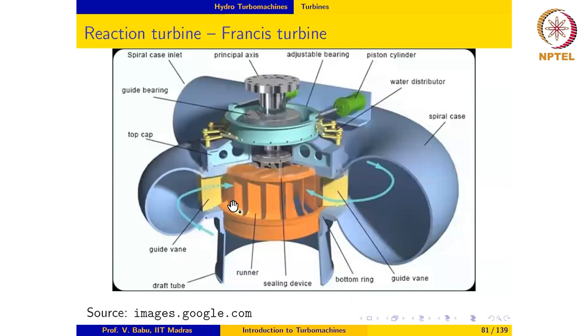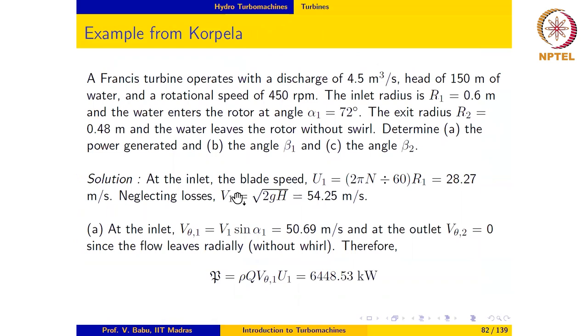So what we will do next is to work through an example involving a Francis turbine. The problem statement reads like this: the Francis turbine operates with a discharge of 4.5 m³/s, head of 150 meters of water and a rotational speed of 450 rpm. The inlet radius r₁ is 0.6 meters and the water enters the rotor at angle α₁ = 72°. The exit radius r₂ equals 0.48 meter and the water leaves the rotor without swirl. Determine the power generated, the blade angle β₁ and β₂.